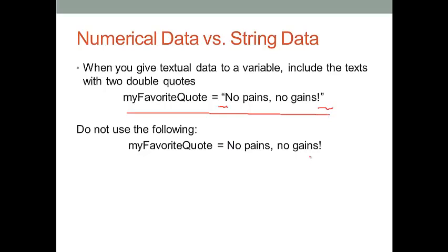But the example below is incorrect because we don't have the two double quotes around no pains, no gains. This is how you create variables in Python.